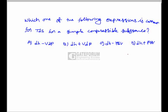Which one of the following expressions is correct for TdS for a simple compressible substance, where notations are as usual? The options are: dh - vdp, dh + vdp, dh - pdv, and dh + pdv.